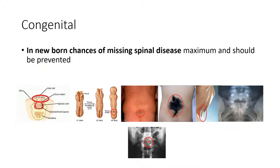A congenital problem of the spine you have maximum chance of missing, because the child never tells you of any problem, and this should be prevented. All obstetricians should be taught to look for this. The laminae do not fuse, leading to a dimple, a tuft of hair, or excessive lumbar lordosis, or it may be visible on X-ray. Whenever you see it, alert your neurosurgeon so that detethering of the nerve roots can be done and impending neurological deficit prevented.